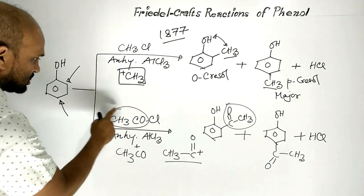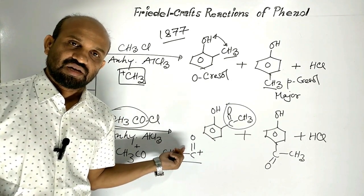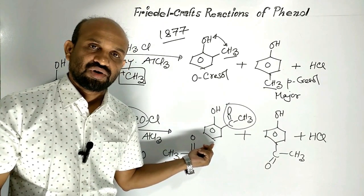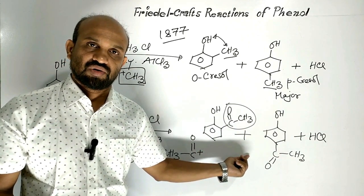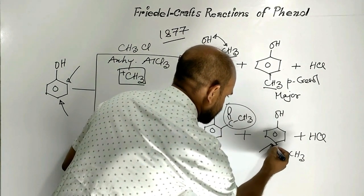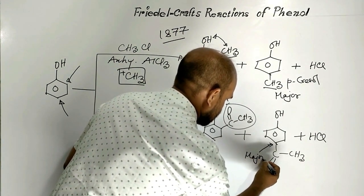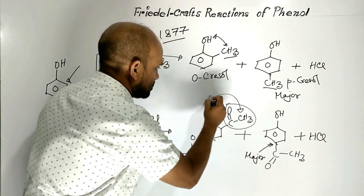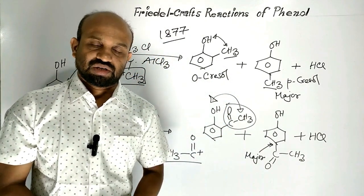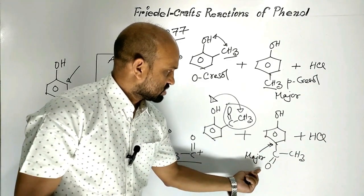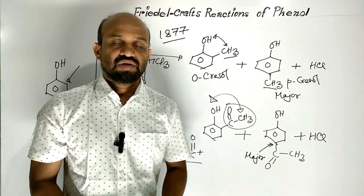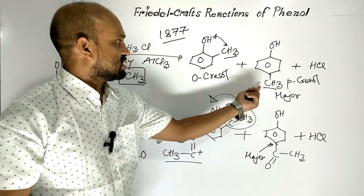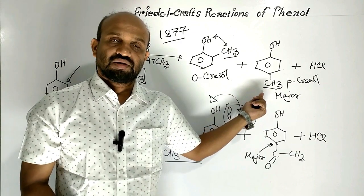Similarly, when phenol reacts with ethanoyl chloride, Friedel-Crafts acylation reaction occurs. Two compounds are formed: ortho-acetyl phenol and para-acetyl phenol. The major product is para-acetyl phenol. In this case as well, because of steric hindrance, ortho-acetyl phenol cannot be formed in large quantities. Due to less steric hindrance at the para position, para-acetyl phenol is formed in large quantities and is the major product.